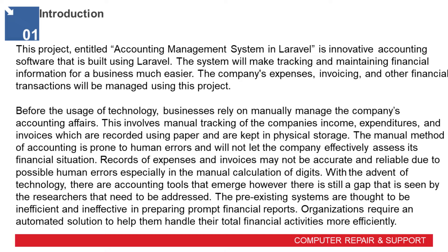Before the usage of technology, businesses relied on manually managing the company's accounting affairs. This involves manual tracking of the company's income, expenditures, and invoices, which are recorded using paper and kept in physical storage. The manual method of accounting is prone to human errors and will not let the company effectively assess its financial situation. Records of expenses and invoices may not be accurate and reliable due to possible human errors, especially in the manual calculation of digits.